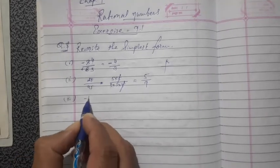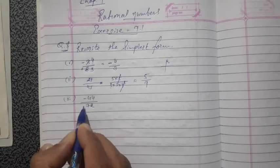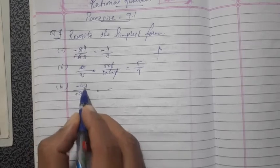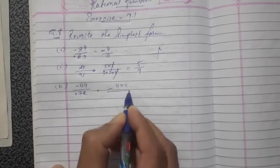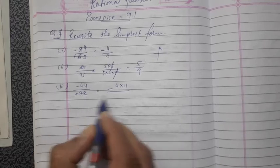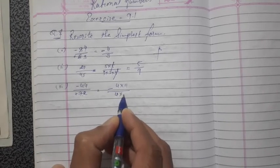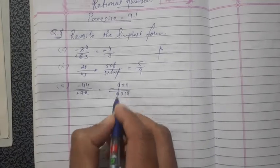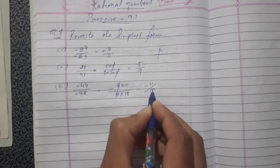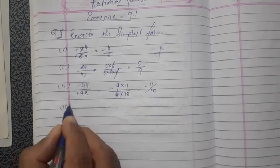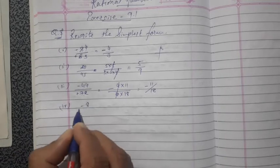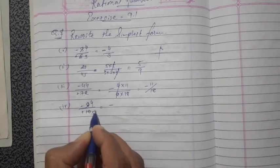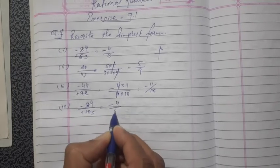Third one: minus 44 upon 72. 44 is 4 into 11, and 72 is 4 into 18. So 4 and 4 cancel, giving minus 11 upon 18. Fourth one: minus 8 upon 10. Here plus minus minus gives minus. 2 goes into 8 giving 4, and 2 goes into 10 giving 5. So the answer is minus 4 upon 5.